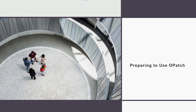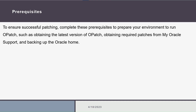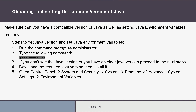Now let's prepare our environment to use OPatch. We need to complete some prerequisites, and before applying any prerequisite we must close any running WebLogic services. First, we need to make sure that we have a compatible version of Java as well as setting its environment variables correctly. To get our Java version we will run the command prompt and type the Java version command. If we don't see the Java version or we have an older version, we must download the compatible version and install it.